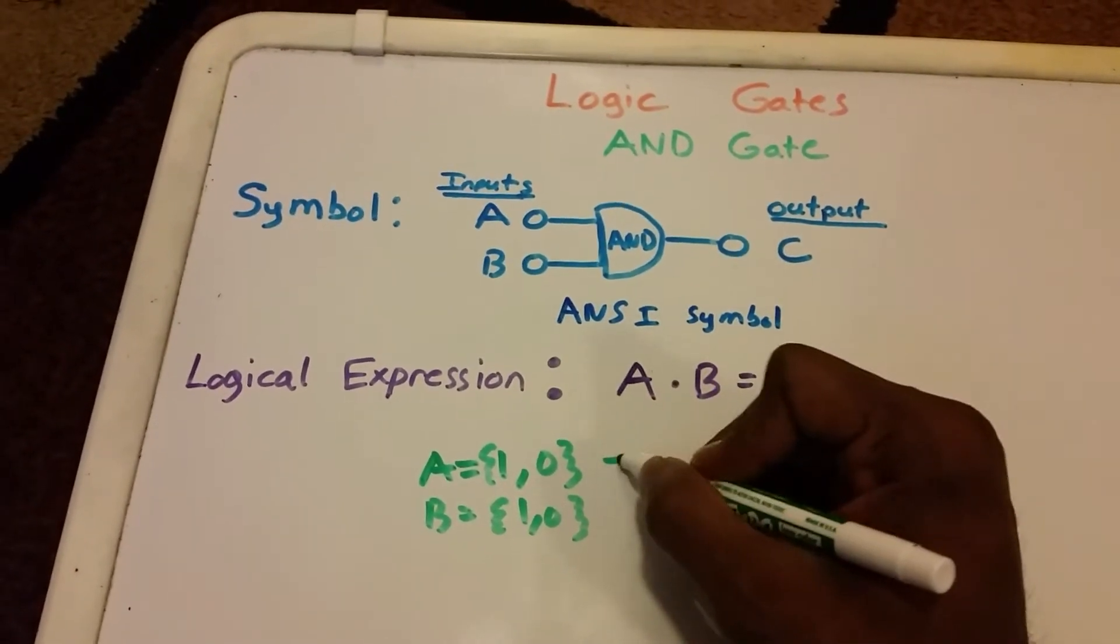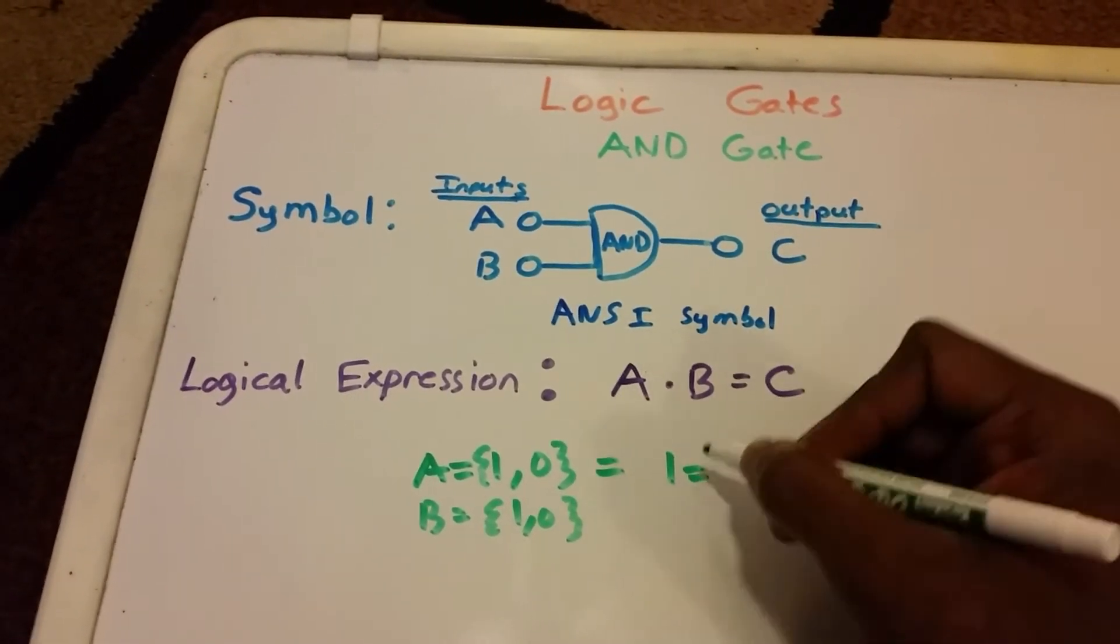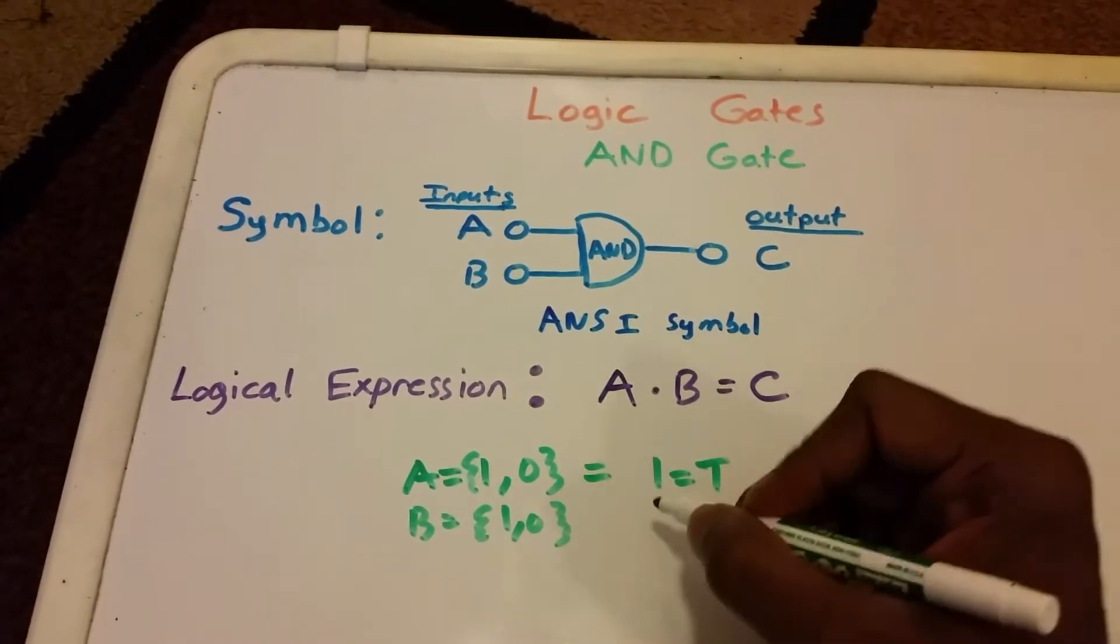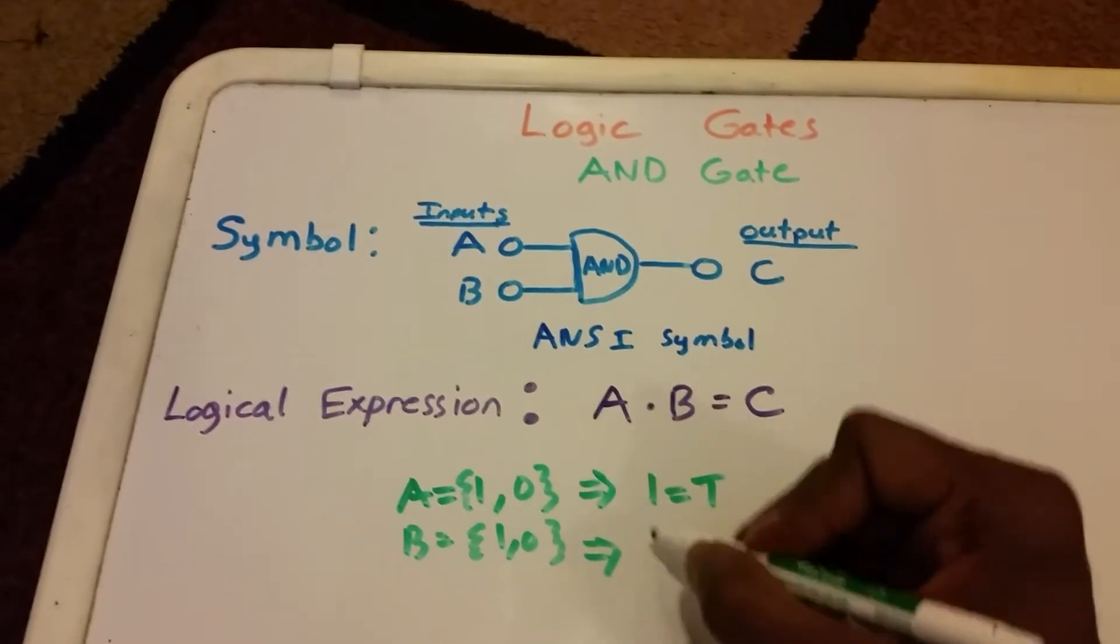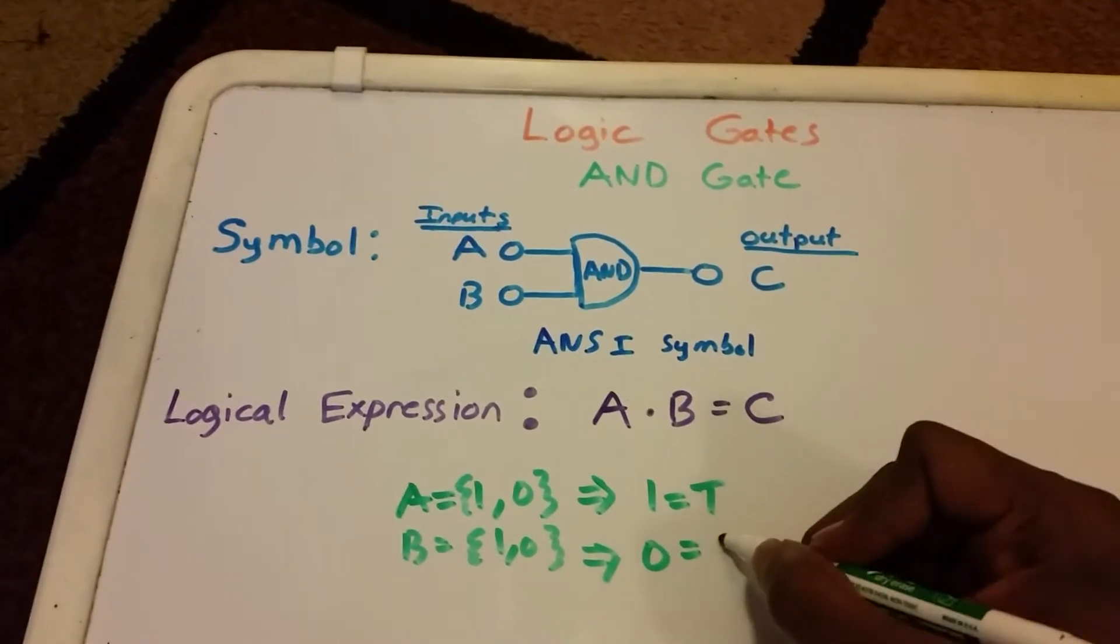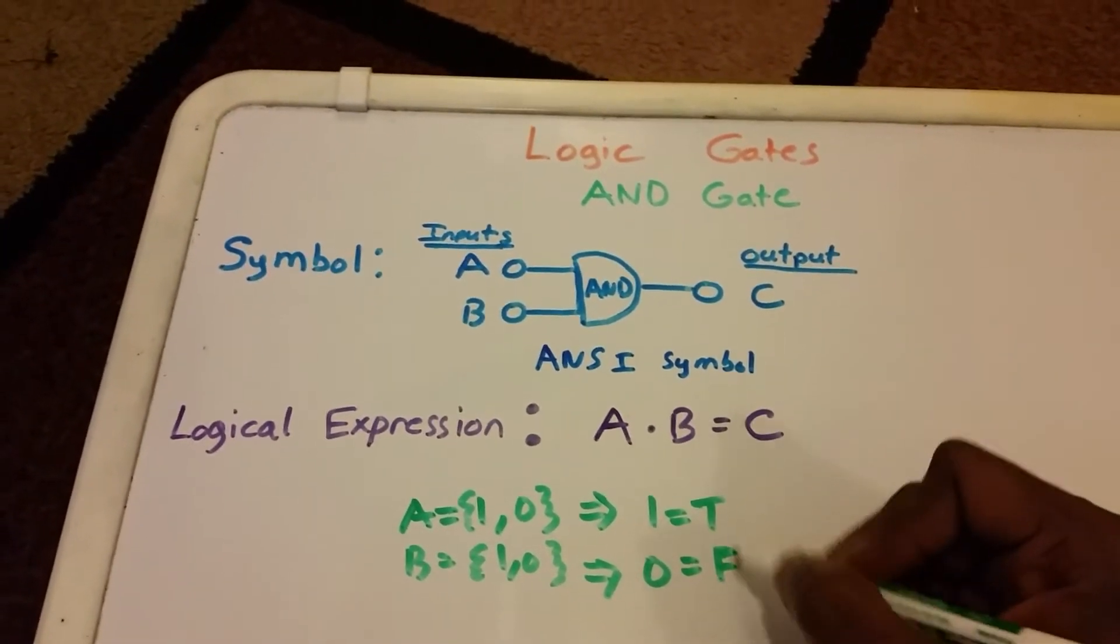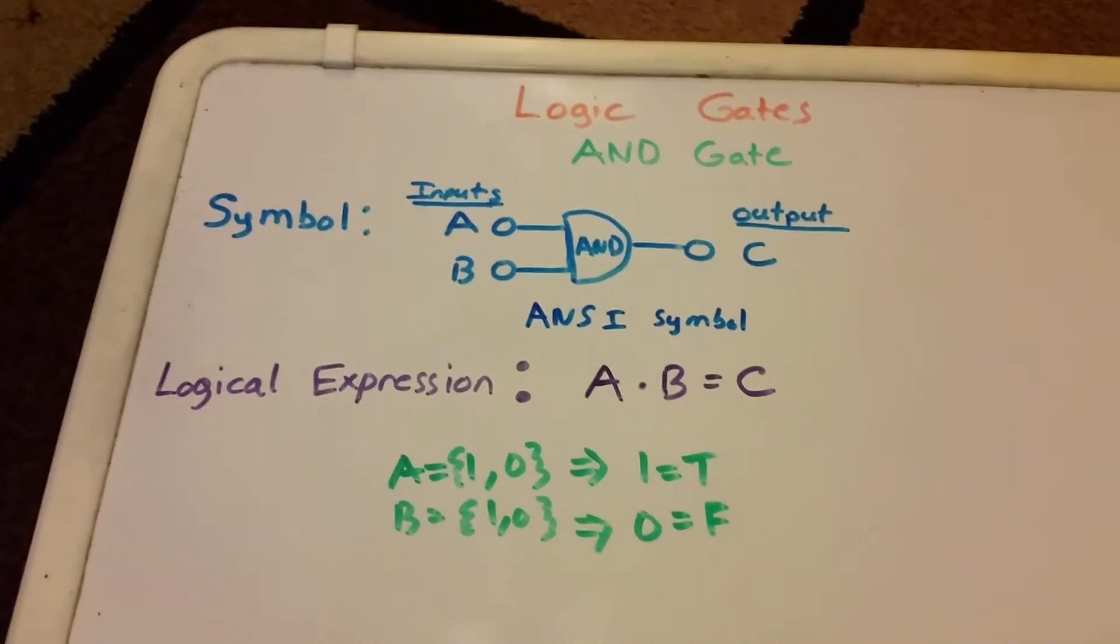One can evaluate to true, so one can be true. We can think of zero as being false, so we'll put F for false and T for true.